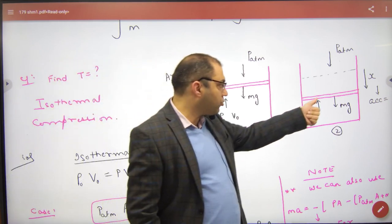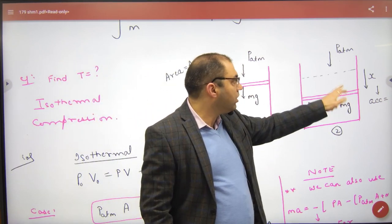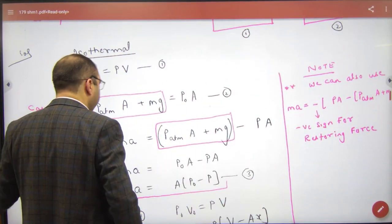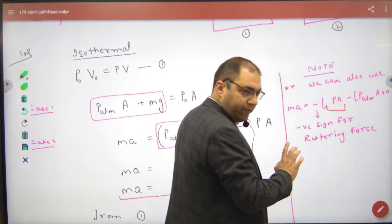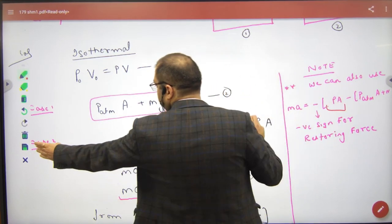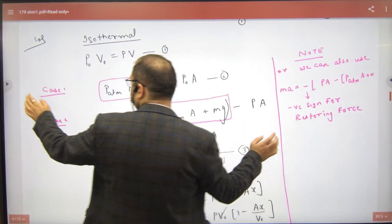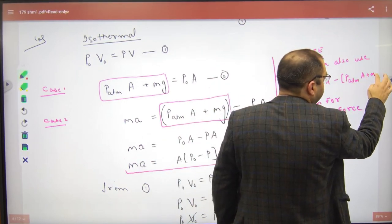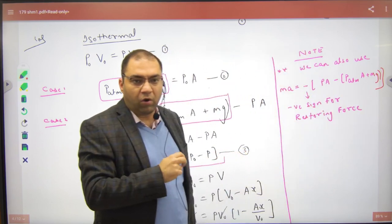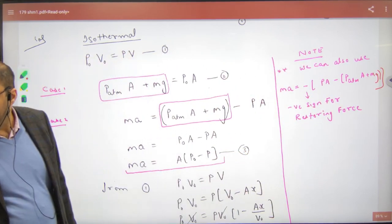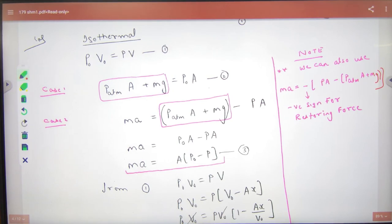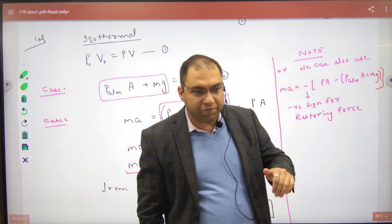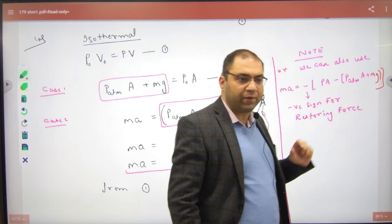The upward force is big and downward force is small. The upward force is pressure into area. The downward forces are Mg and P-atmospheric into area. The net restoring force is the upper force minus the lower force, which is P into A minus P-atmospheric A plus Mg.